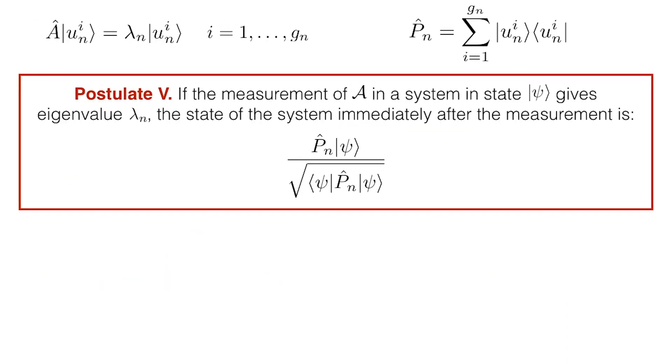We're now ready to update postulate 5 to the case of degenerate eigenvalues. The updated postulate tells us that if the outcome of a measurement of quantity A-hat of a system in state psi is lambda n, then the state of the system immediately after the measurement is the normalized projection of psi onto the subspace spanned by the eigenvalue lambda n. This sounds like a mouthful, but the essential message of the postulate is unchanged. The state psi of the system changes after the measurement, and it becomes a new state that is associated with the eigenvalue that we've measured.